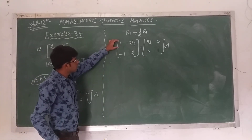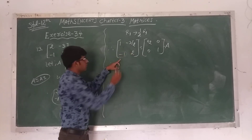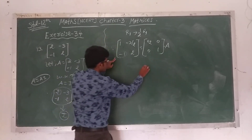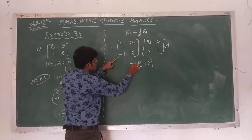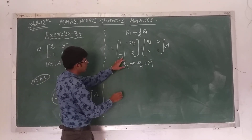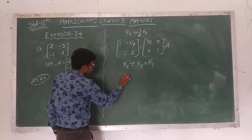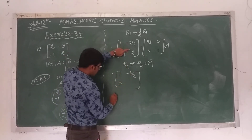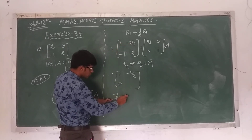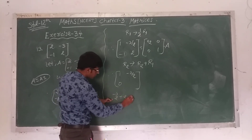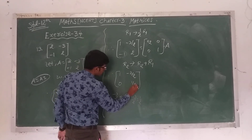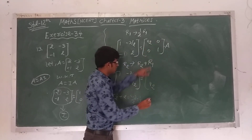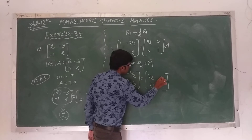What is our next goal? We have to make the A(2,1) element equal to 0. We add the first row to the second row: R2 tends to R2 + R1. First row as it is: [1, -3/2] and right hand side [1/2, 0]. Second row: -1 + 1 = 0, 2 + (-3/2) = 4/2 - 3/2 = 1/2. Right hand side: 0 + 1/2 = 1/2, 1 + 0 = 1. So the matrix becomes [1, -3/2; 0, 1/2] = [1/2, 0; 1/2, 1] times A.